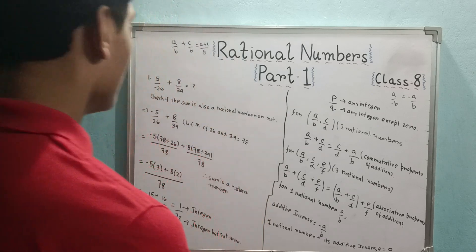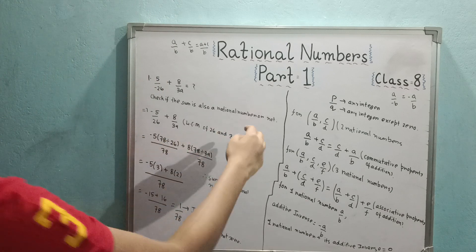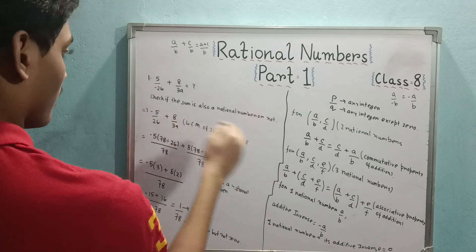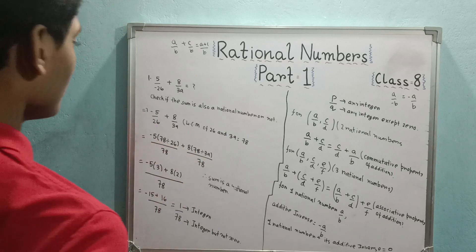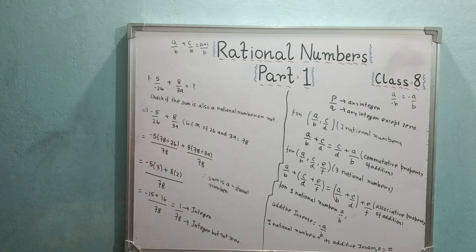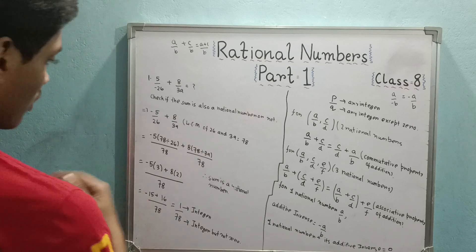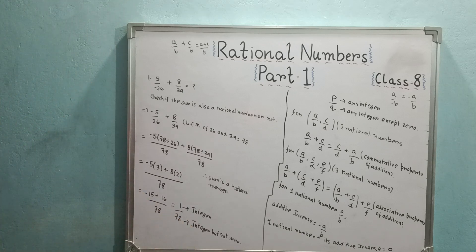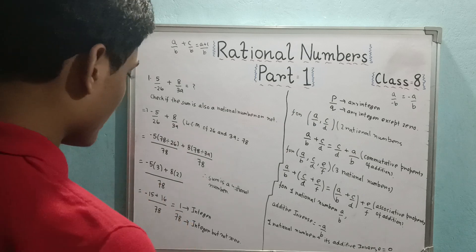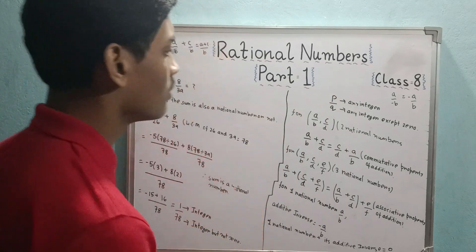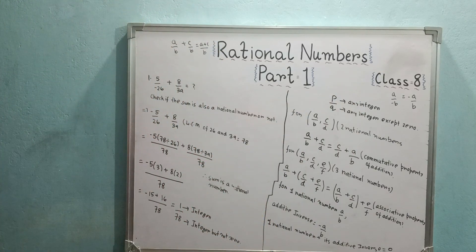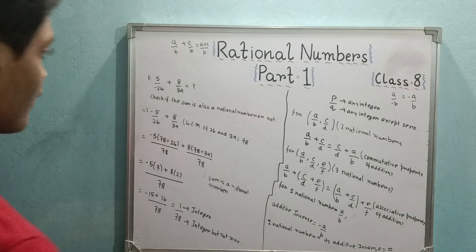The process: take LCM, multiply LCM by each denominator times the respective numerator, then add the numerators for the common denominator. The result is 1 by 78. Here p equals 1 is an integer, q equals 78 is also an integer and not zero — that is the condition for a rational number. So the sum 1 by 78 is also a rational number.